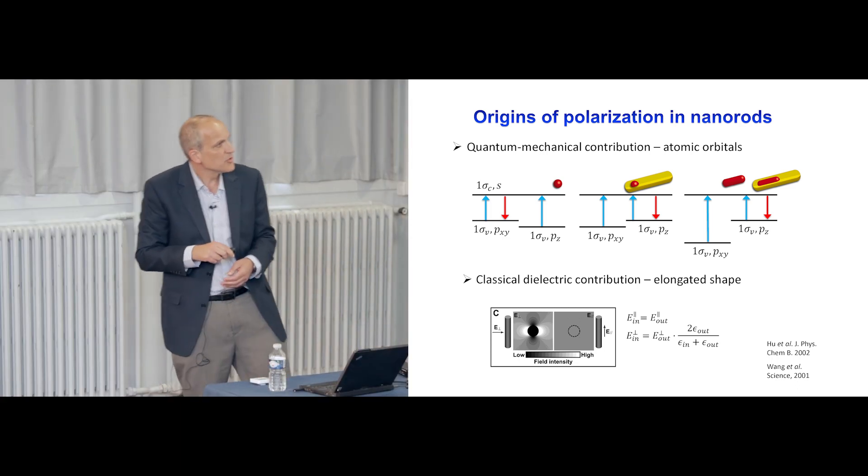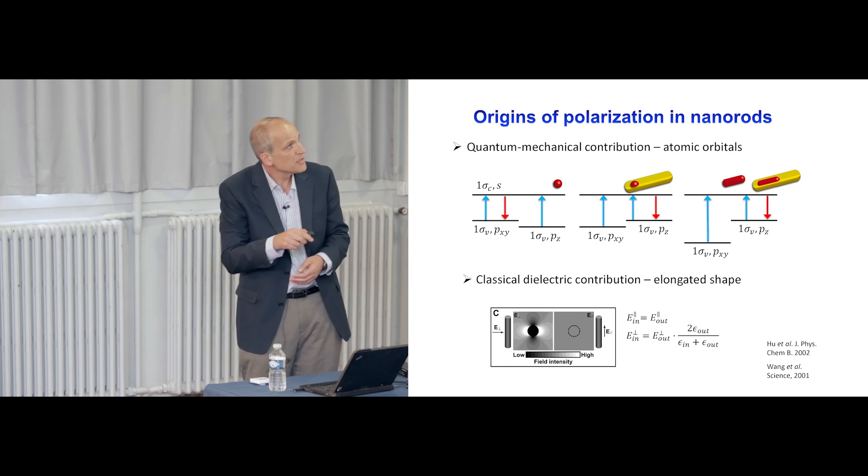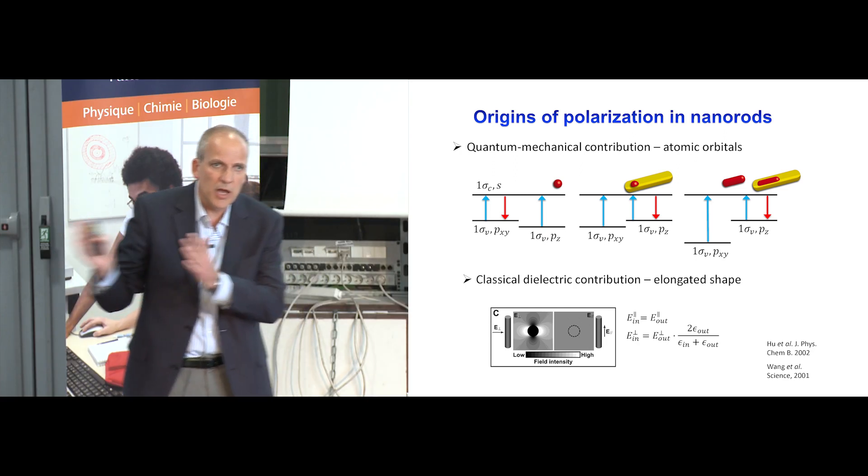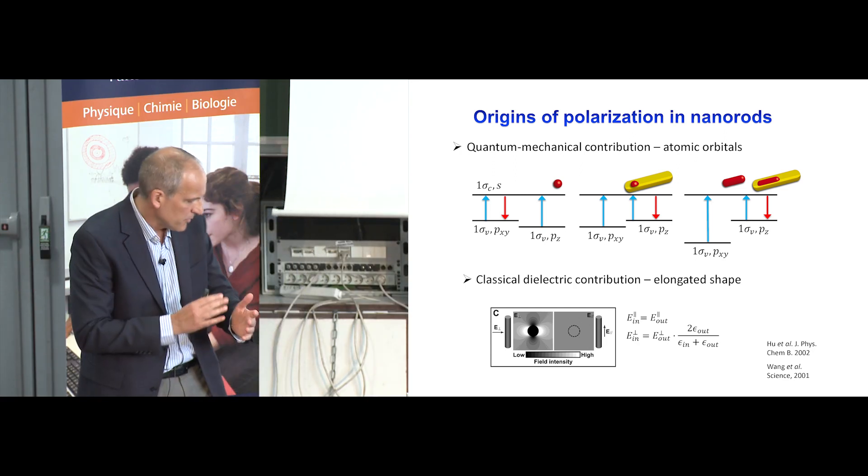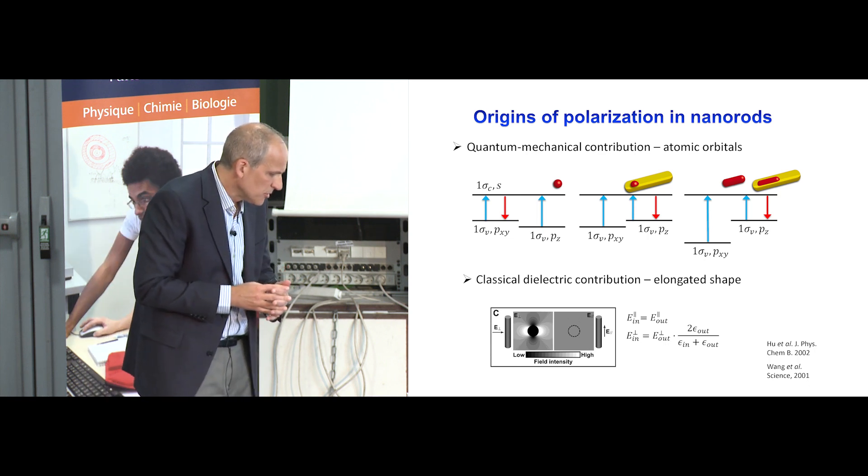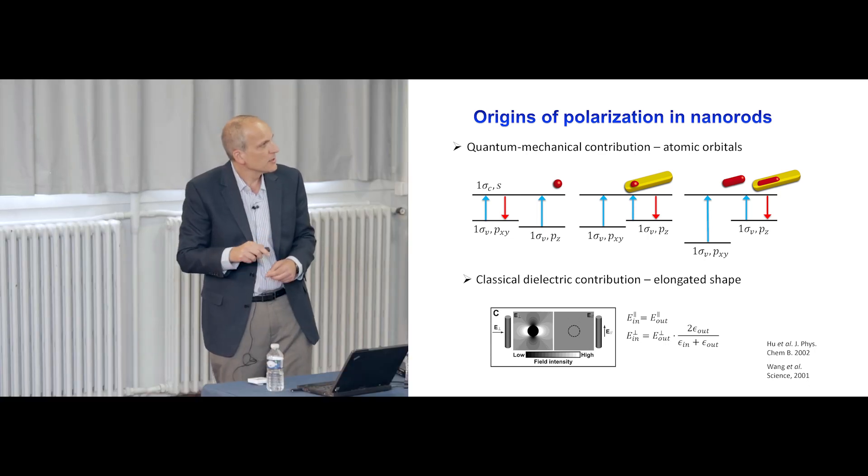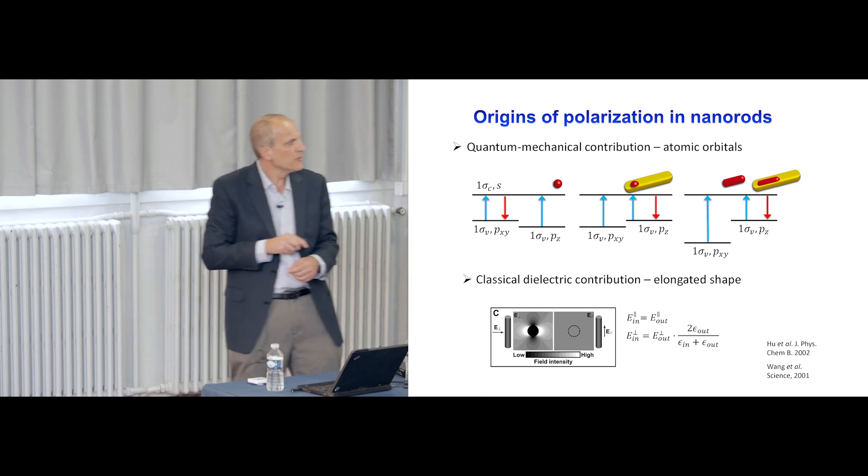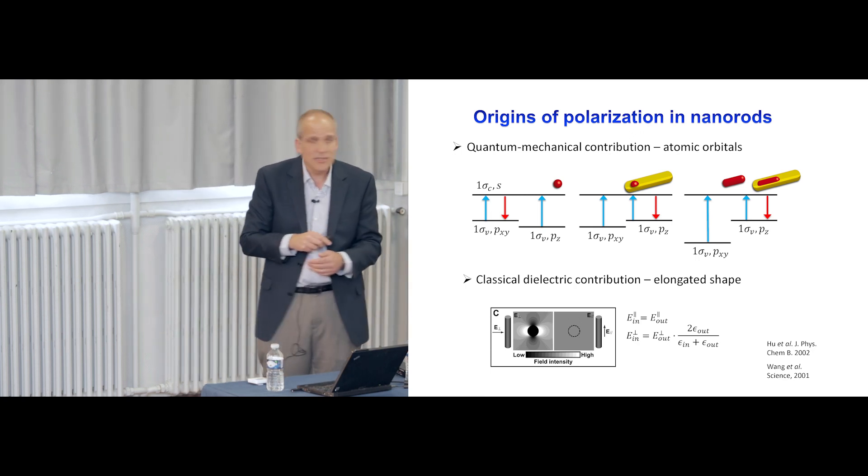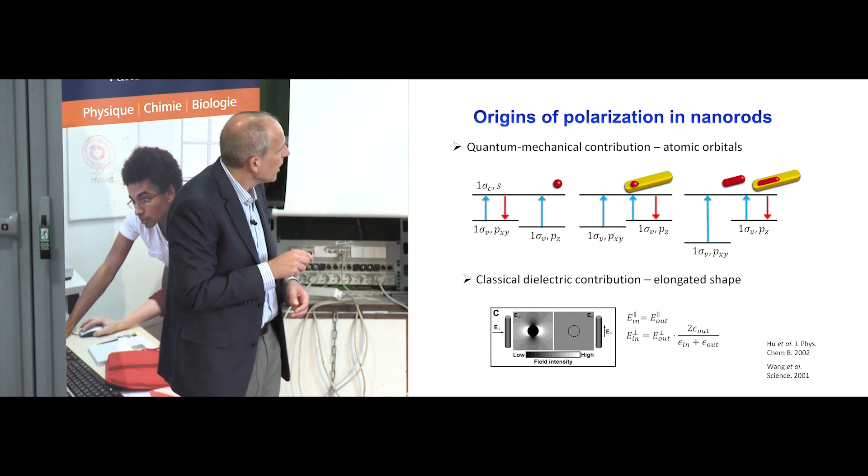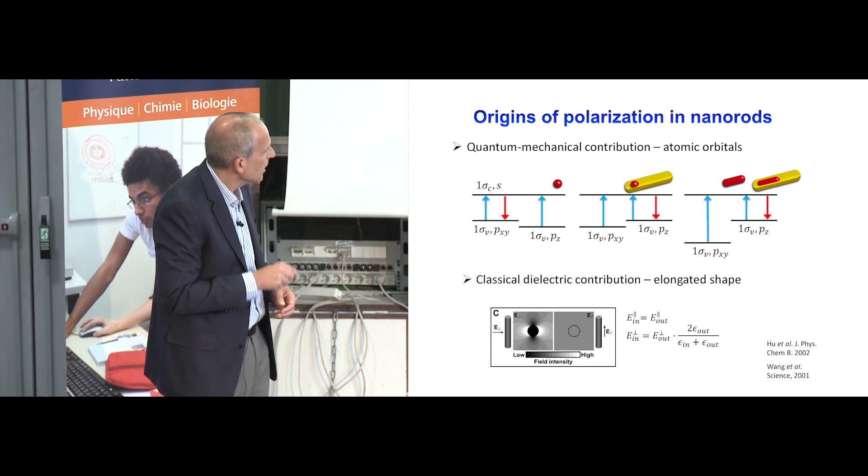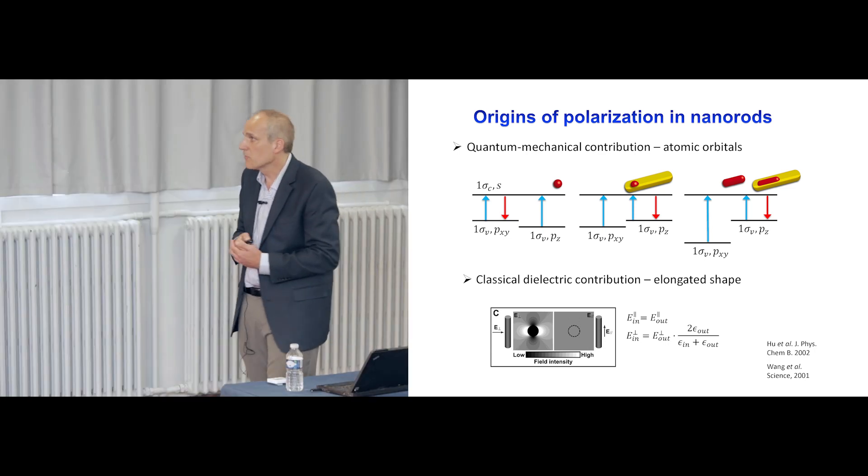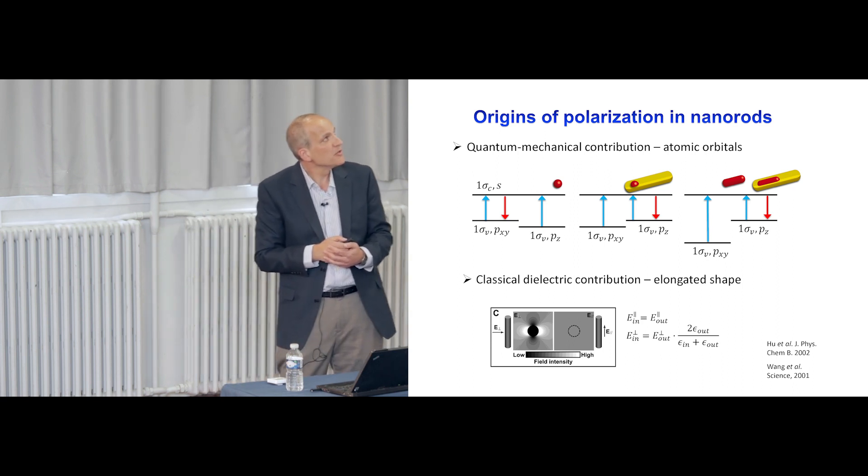Concerning the absorption, which is also polarized in these nanorod systems, this is related to classical dielectric contribution when we go to higher states. When you go to higher levels, we have quite a dense distribution of states, and there's also a classical dielectric contribution in which the field component, the electromagnetic field component perpendicular to the rod is attenuated significantly, while the one which is parallel to the rod is actually maintained, and therefore you also have contribution to polarization and absorption related to this dielectric effect.